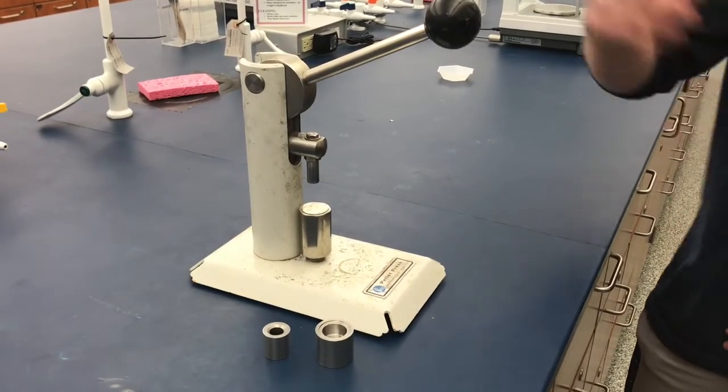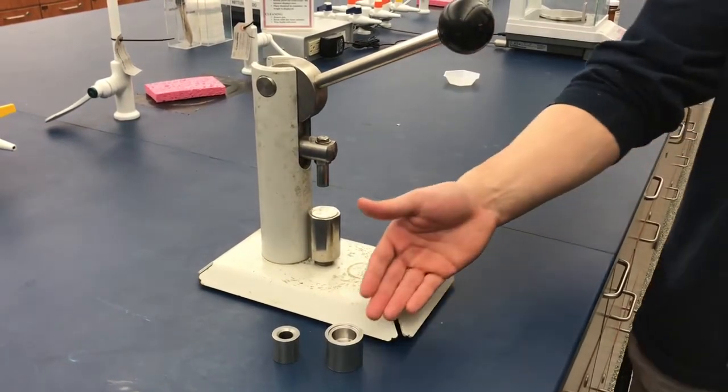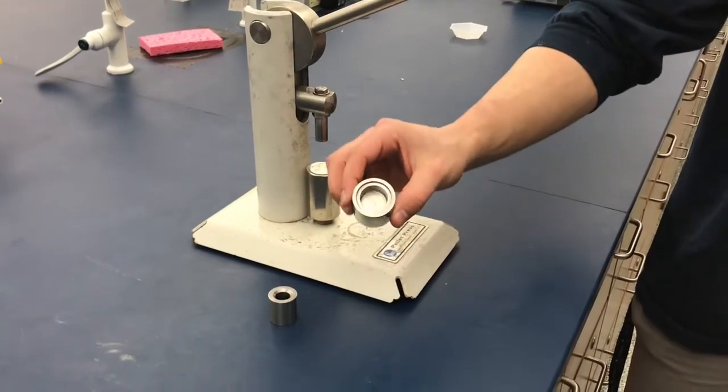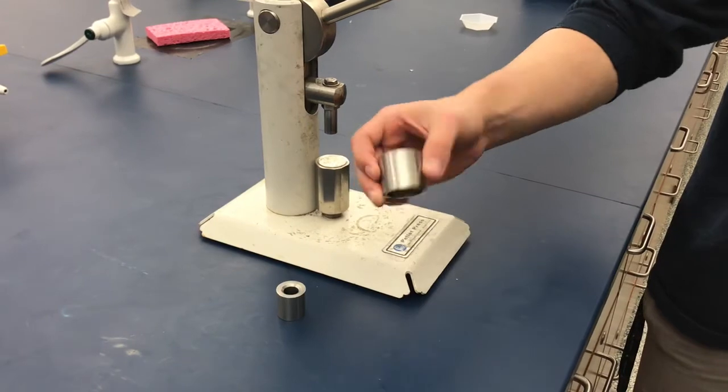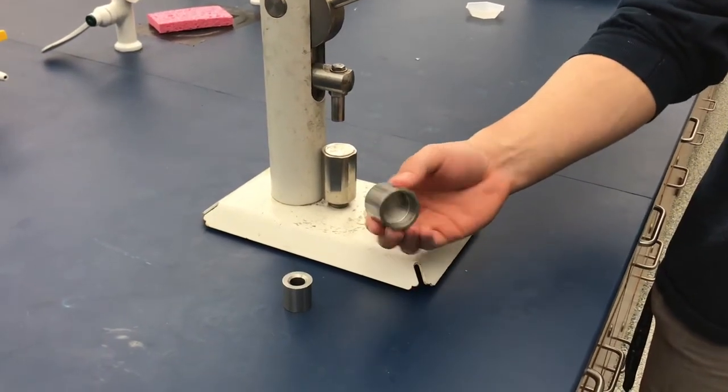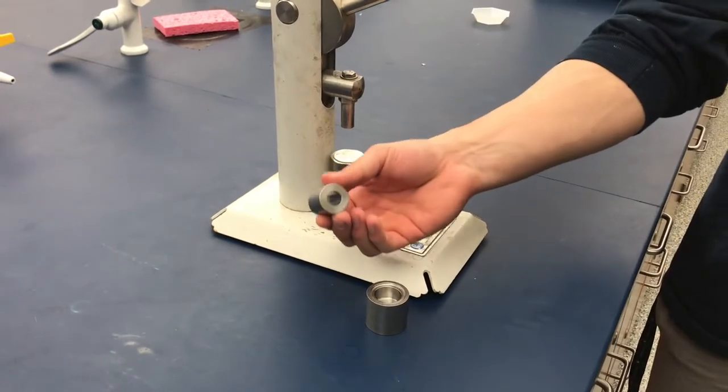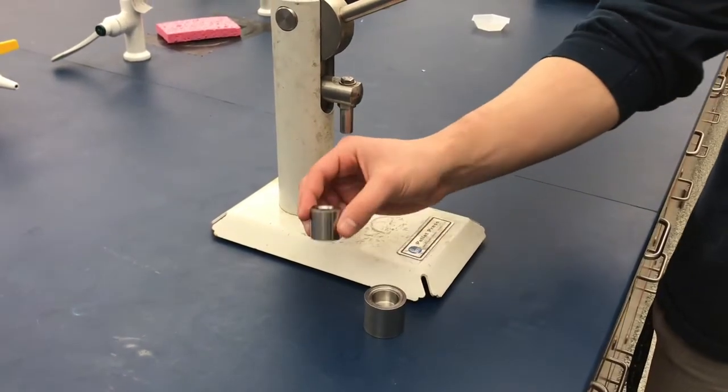When you arrive at the pellet press, you will see two circular tubes. Tube number one is the larger of the two, having a beveled edge on one side and a flat edge on the other. Tube number two looks similar, having both a beveled and a flat edge, however it is smaller than tube number one.